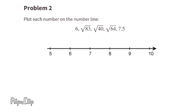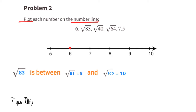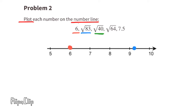Problem 2: Plot each number on the number line. The first number we need to plot is 6 — that's easy enough, we can put a point right above the 6 on the number line. The next number is the square root of 83. We know that 9 times 9 is 81, so the square root of 83 is just going to be a little bit greater than 9, so we can plot our point just to the right of the 9 on the number line.